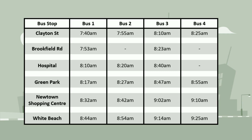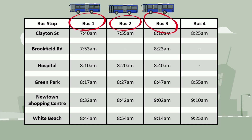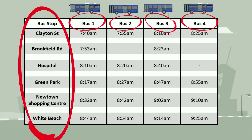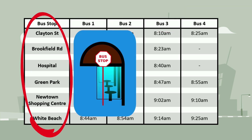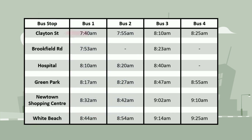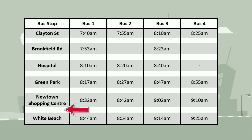We'll start with this bus timetable. We can see that the timetable shows the times for four buses. On the left hand side are the stops the buses will make. It tells us its first stop, Clayton Street, and all the stops it will make along its way to its final destination, White Beach.